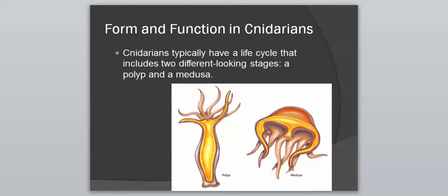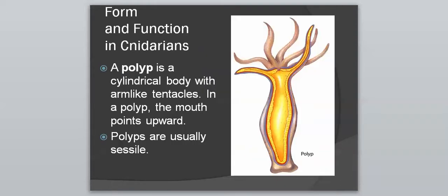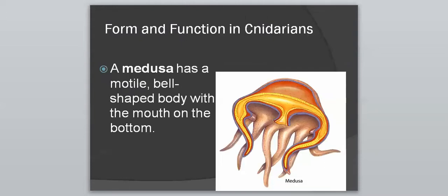We have the polyp on the left and the medusa on the right. A polyp is a cylindrical body — shaped like a cylinder — with arm-like tentacles. In the polyp, the mouth points upward, below the tentacles. Polyps are usually sessile, meaning they are attached to one spot.